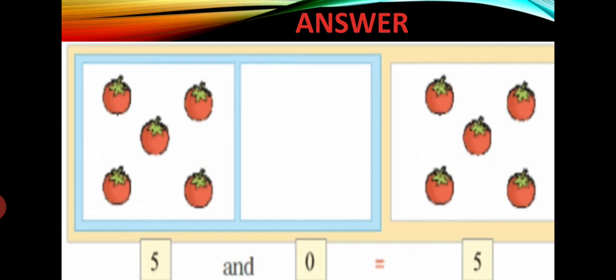Adding 0 doesn't make a difference as we actually add nothing. 0 means nothing — no value. So the answer will remain the same. 5 and 0 is equal to 5.